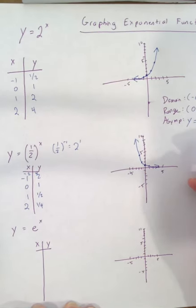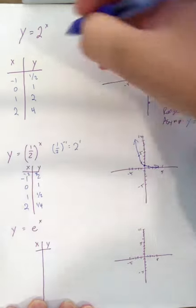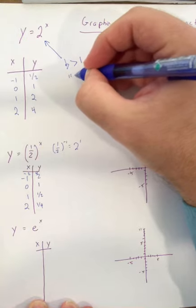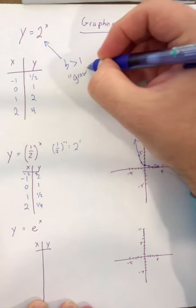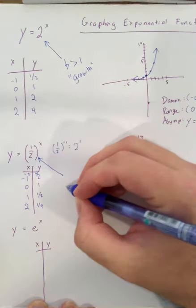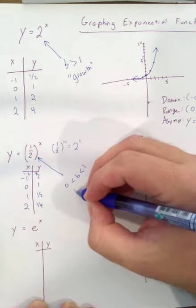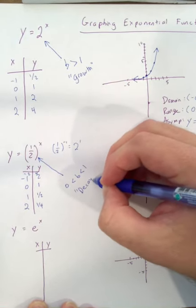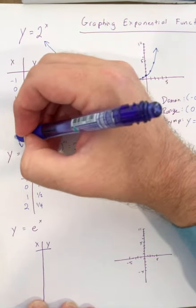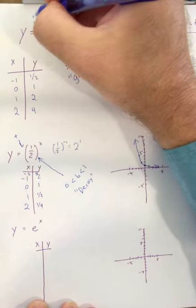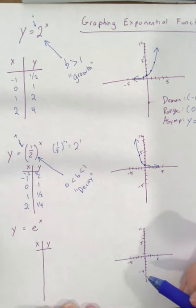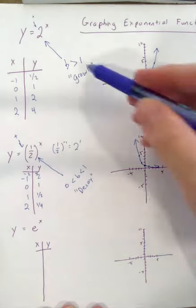The domain, range and asymptote would all be the same for this. So if the base is greater than one, this is known as growth because it's increasing. If the base is between zero and one, it's known as decay because it's decreasing in value. In both these cases, this lead term needs to be positive in order for it to be growth or decay. Otherwise, the graph would be entirely underneath the x-axis. It would still be an exponential function, but not growth and not decay.